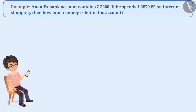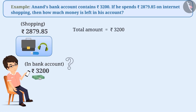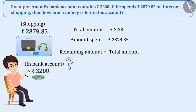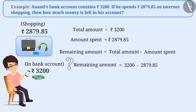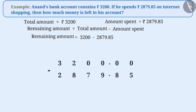Next example. Anand's bank account contains Rs. 3,200. If he spends Rs. 2,879.85 on online shopping, then how much money is left in his account? The total money in Anand's account is Rs. 3,200. He spent Rs. 2,879.85 on online shopping. Therefore, the remaining amount is equal to total amount minus amount spent on shopping, that is Rs. 3,200 minus Rs. 2,879.85. In order to obtain the result of this subtraction, let us write these decimal numbers one below the other, taking care to write the digits according to their place value.